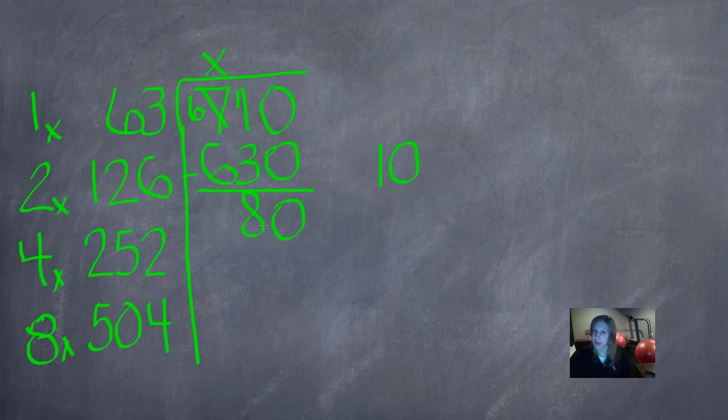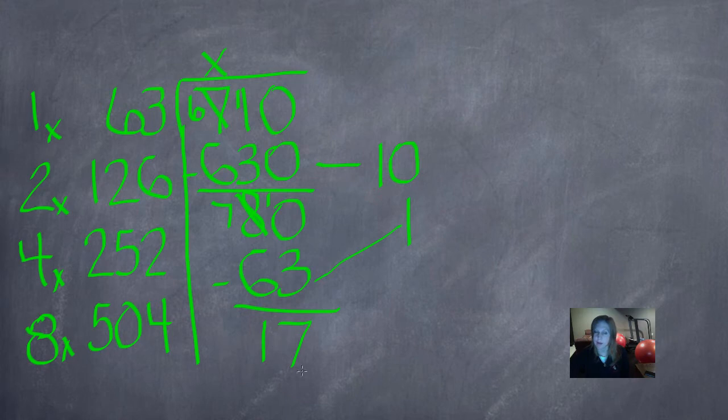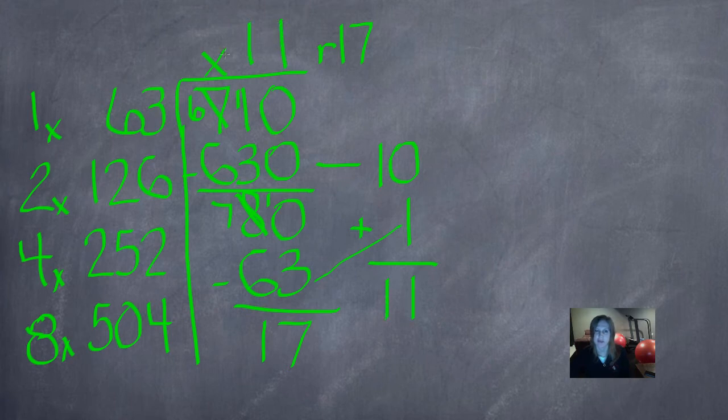Now we're looking for the closest number to 80 without going over, and that also is 63. Take the 1 that's next to it. We didn't annex any 0s here, so I'll write it in the 1s place. I'm always bad about forgetting to connect those, but we need to. 0 minus 3, you can't do. 10 minus 3 is 7. 7 minus 6 is 1. There is no number that will go into 17 without going over, and 17 is less than our divisor, so our remainder is 17, and our quotient is 10 plus 1, which is 11. Don't forget to check it using multiplication and add your remainder at the end.